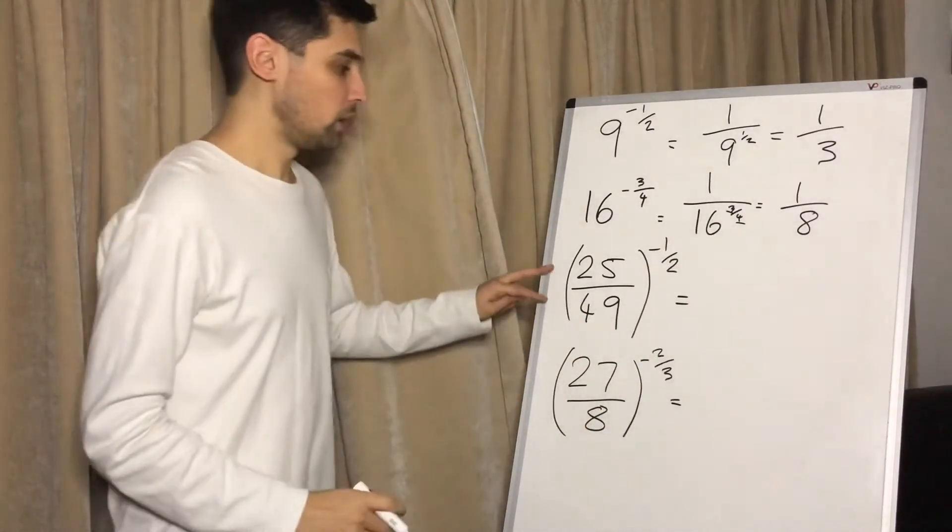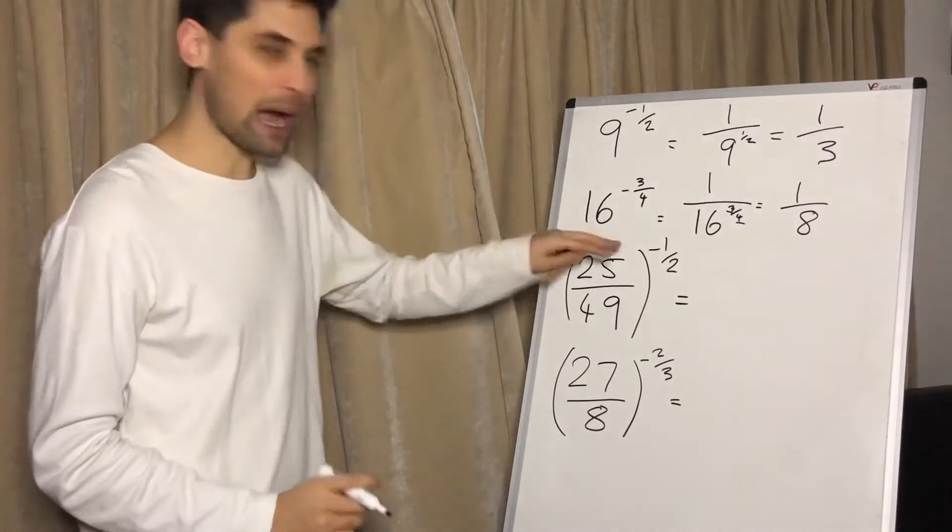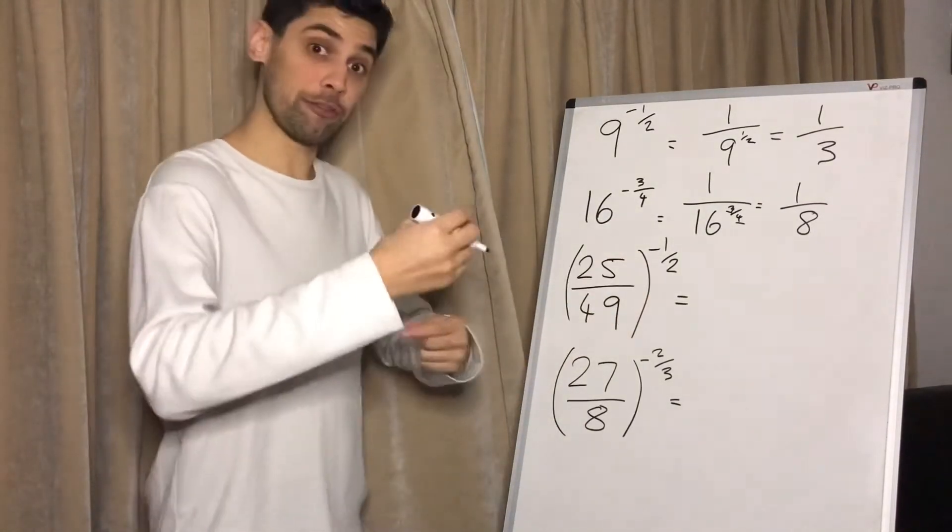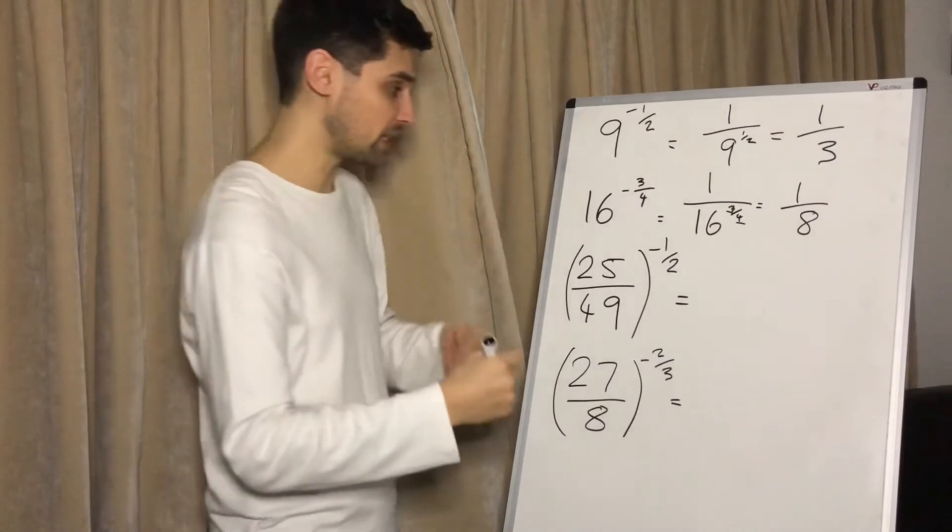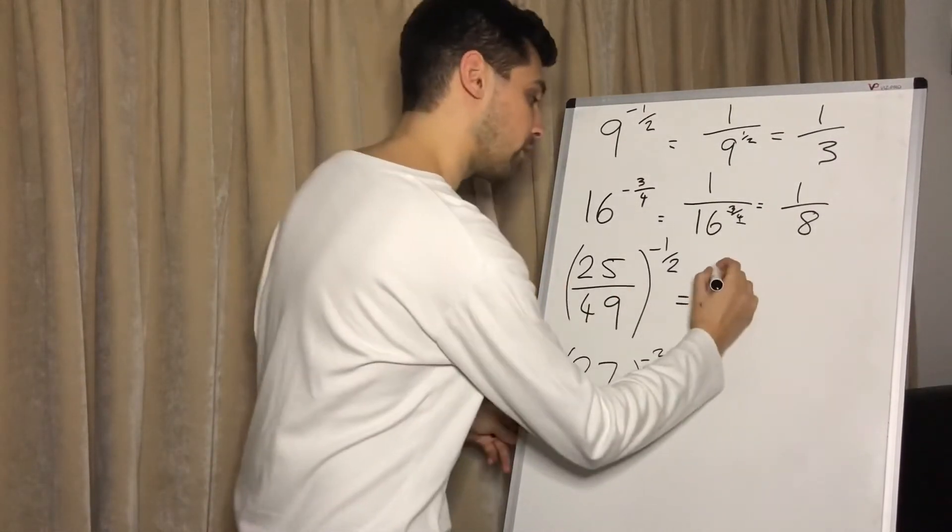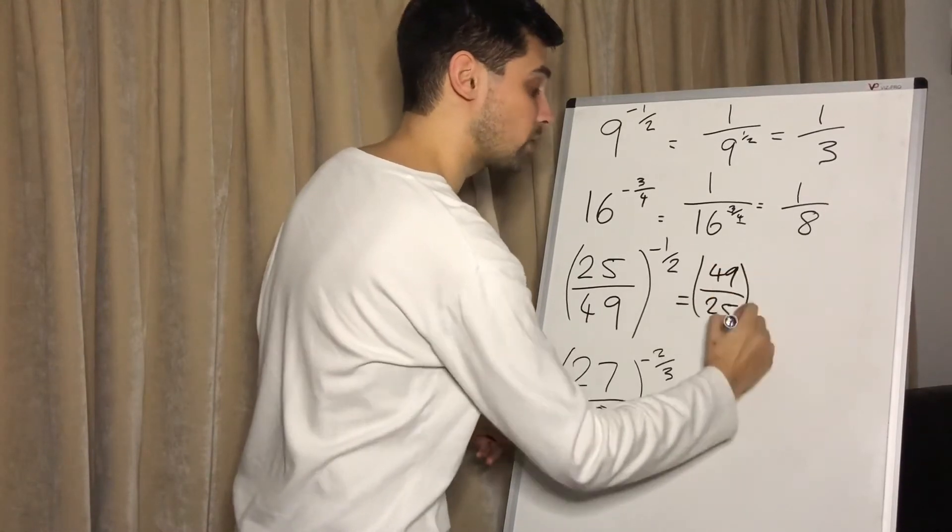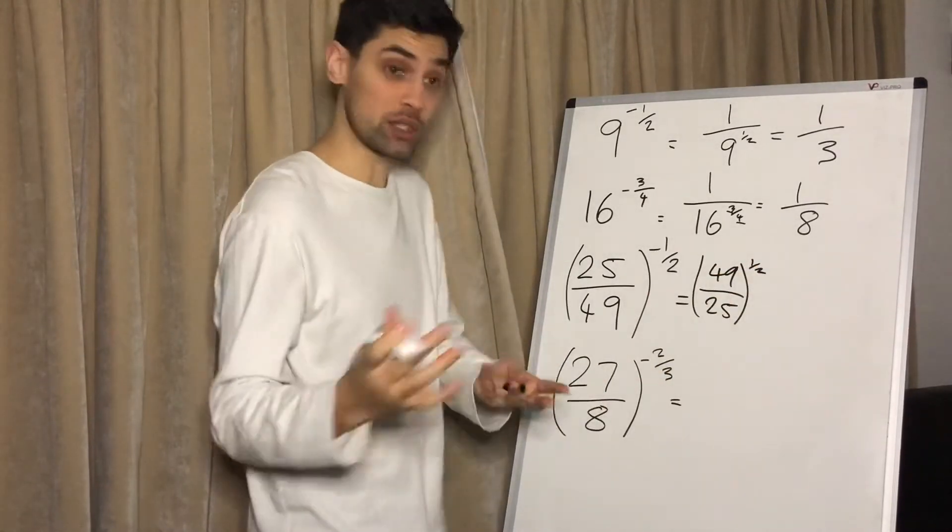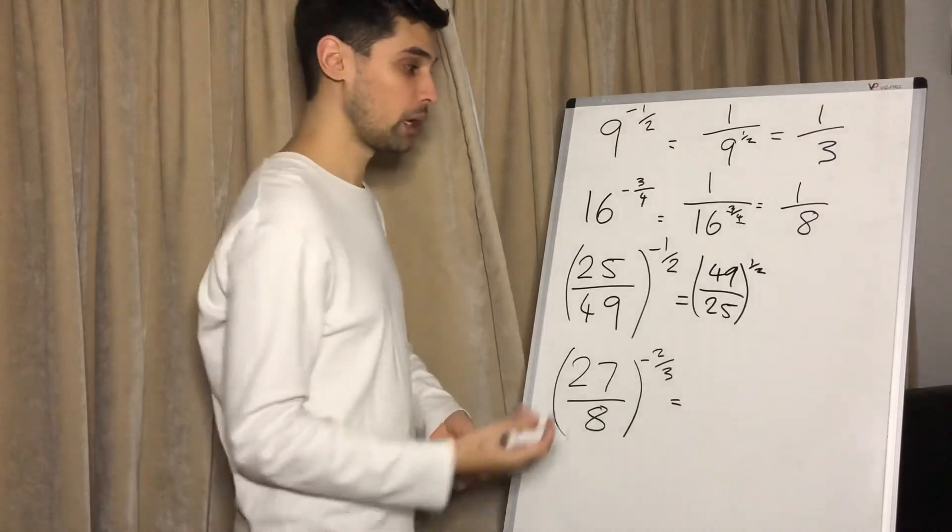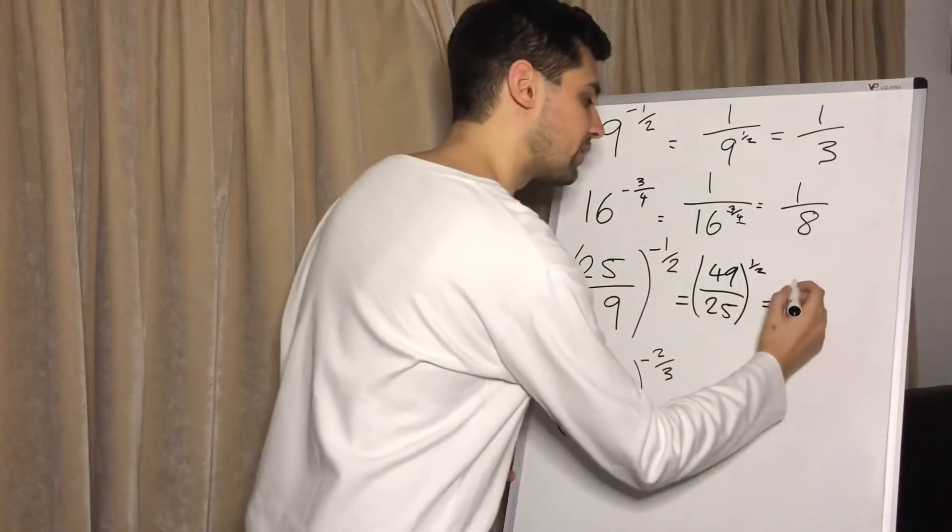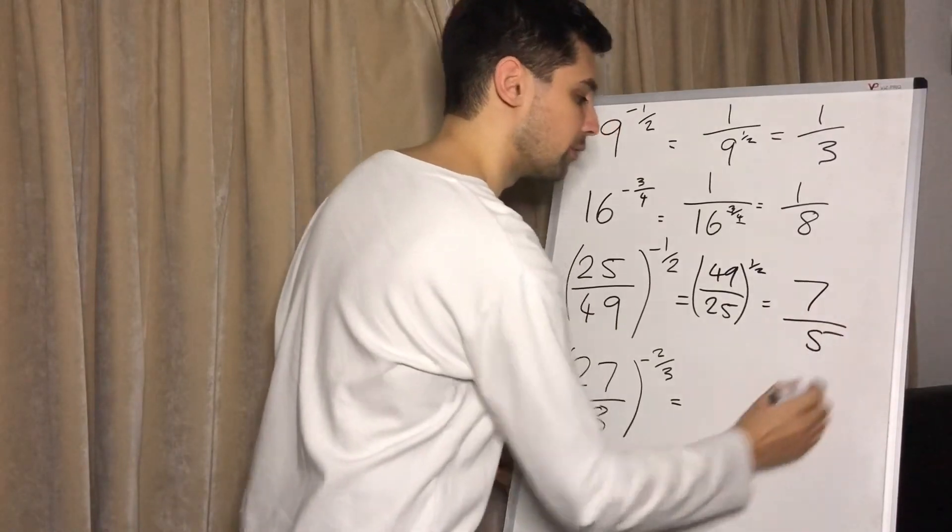Now here, don't stress if we've got a fraction to the power of a negative fraction. It's going to be okay. Remember, a negative power finds the reciprocal, flips it upside down. So just deal with that bit first. So that's going to create 49 over 25, still to the power of a half, but now to the power of a positive half because we've dealt with the negative. Power of a half means square root, square root that and that. That gives us seven over five.